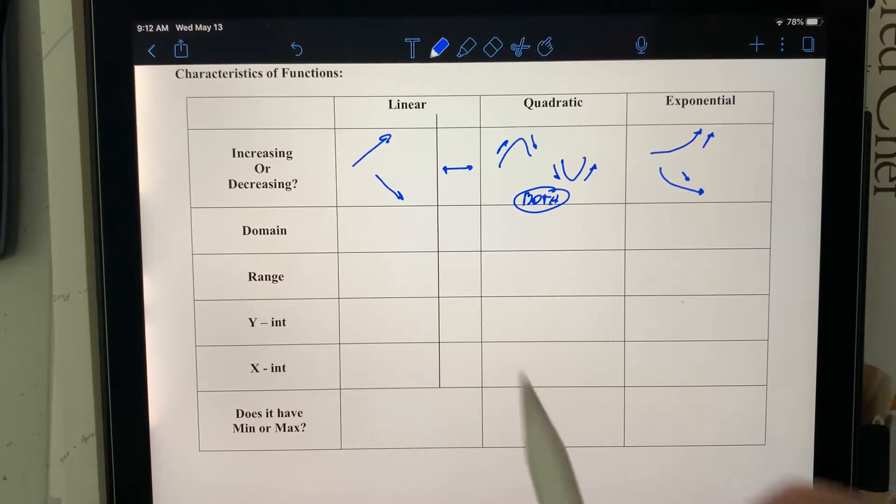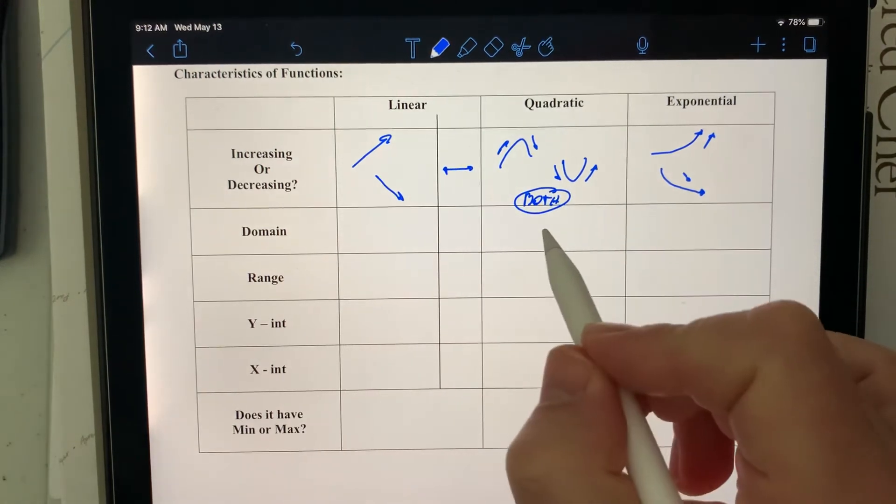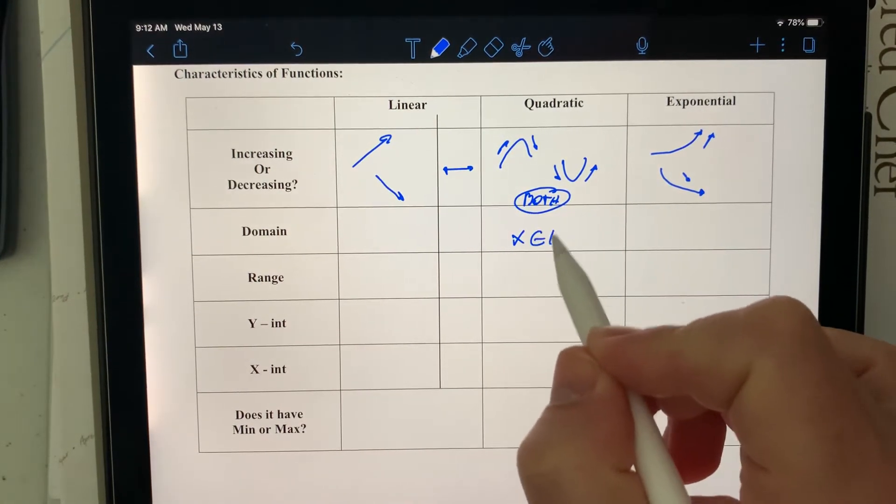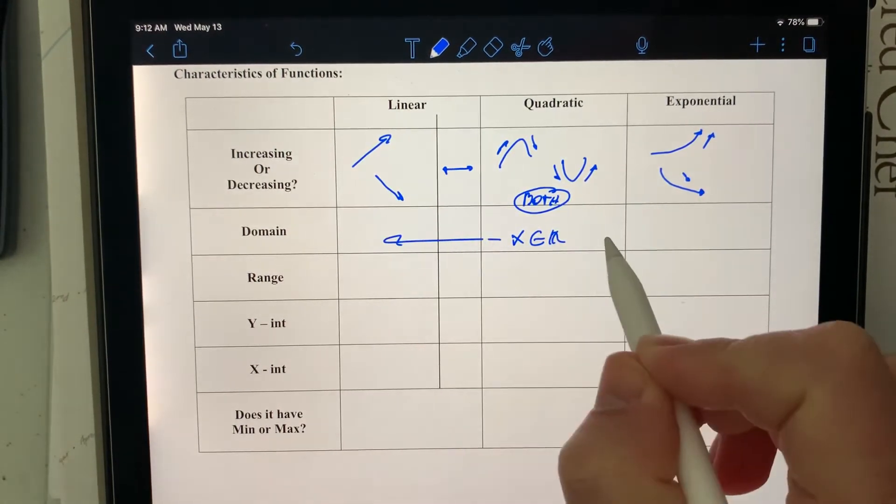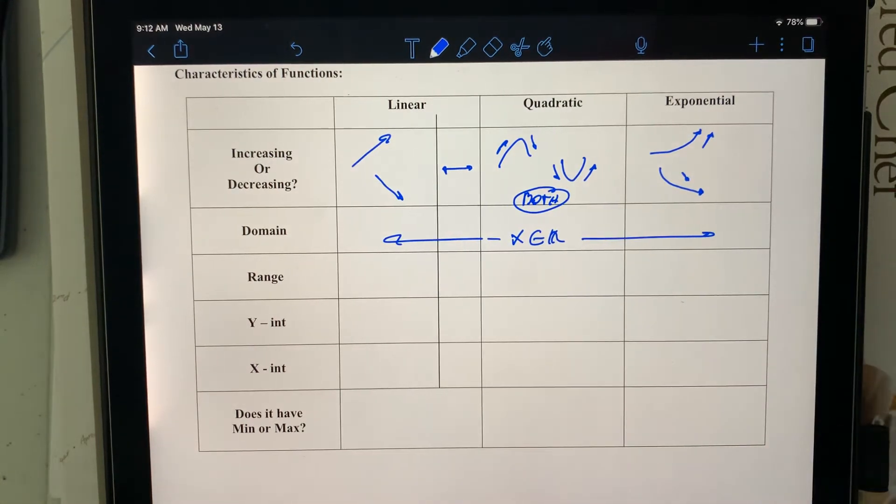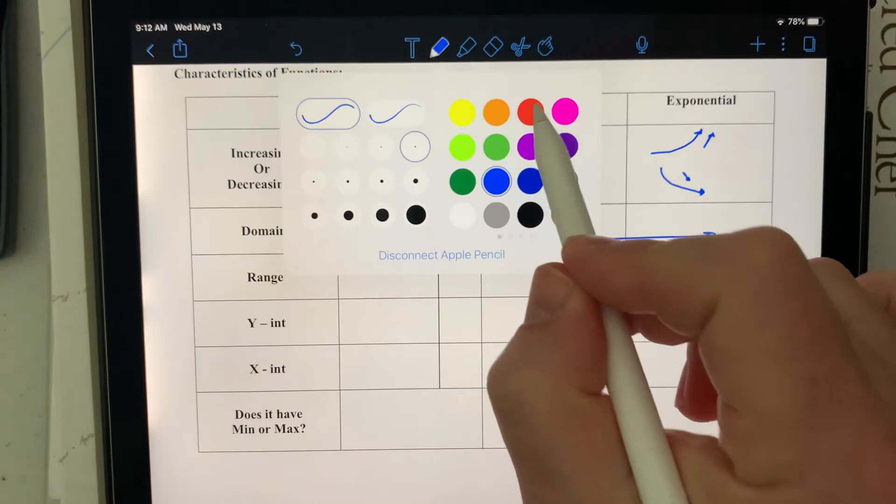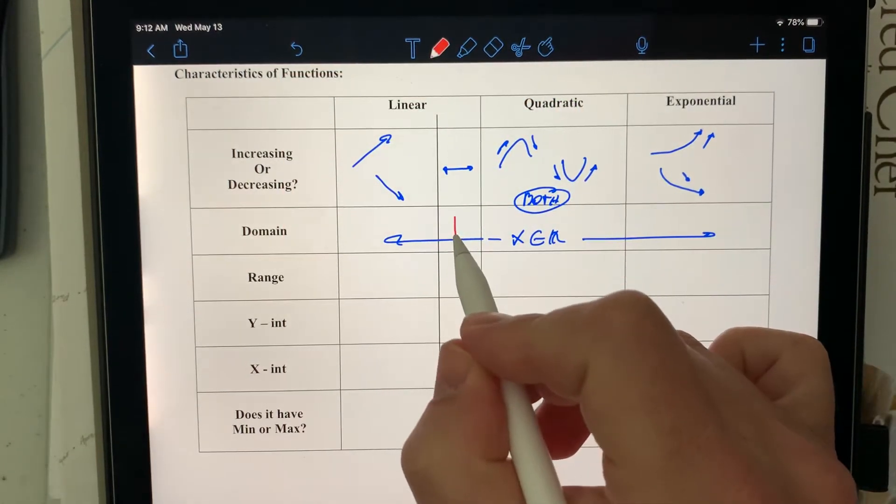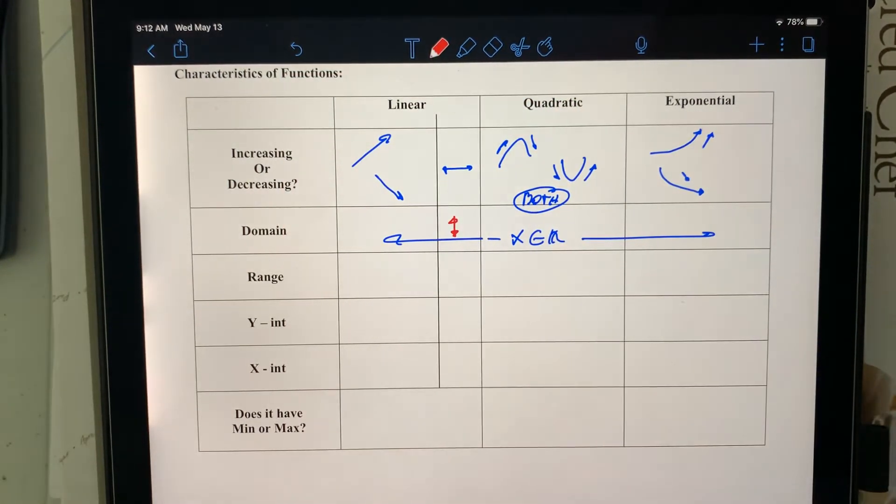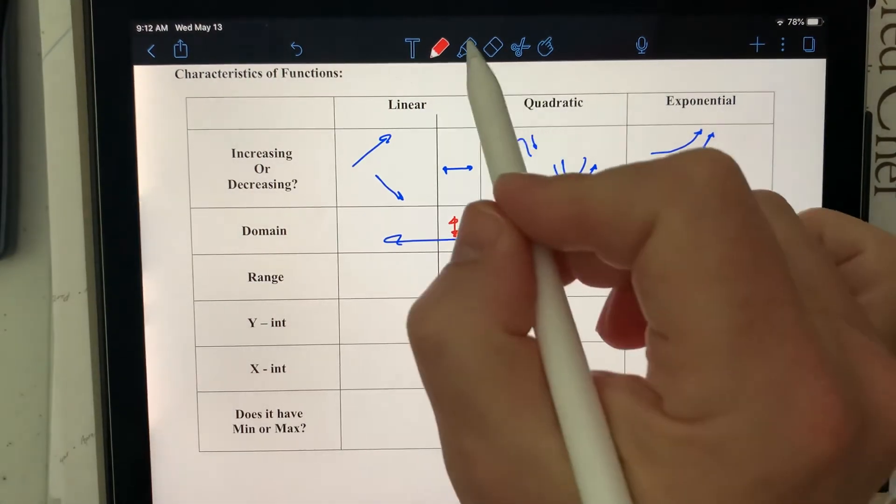Domain and range. The domain for all of them is x belongs to the real numbers. Linear goes forever left to right, quadratic goes forever from left to right, exponential goes forever from left to right, except for one. And the linear, if any vertical line, that would be an exception because that only has like one value for the domain.